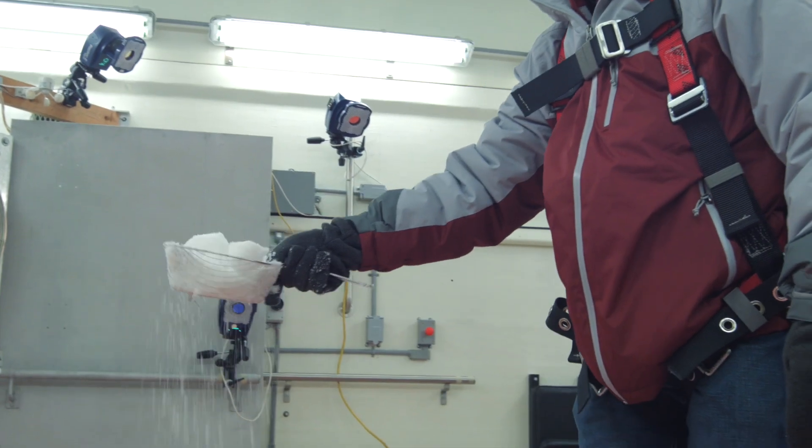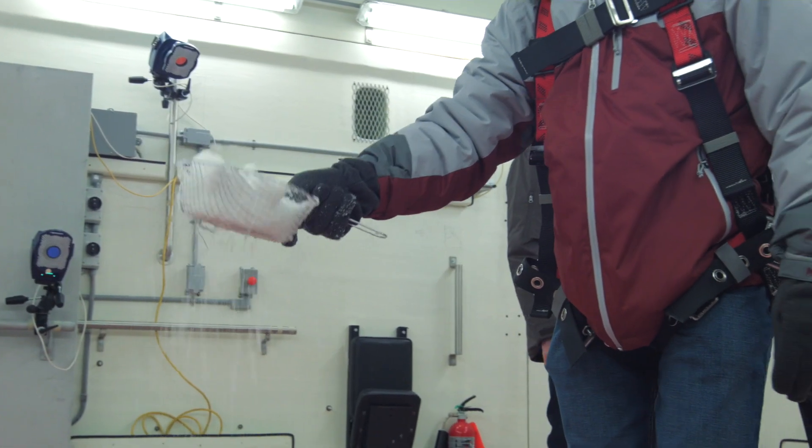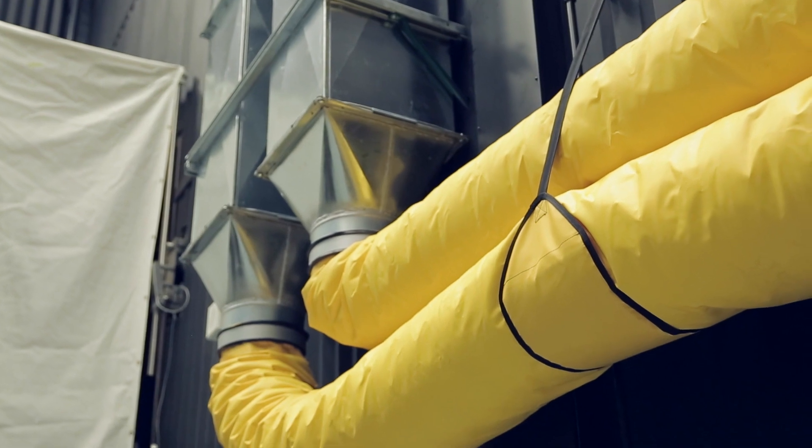That's really important, because wet ice and dry ice behave very differently. And we can also turn on a lot of wind. So we can create Mini Canada.